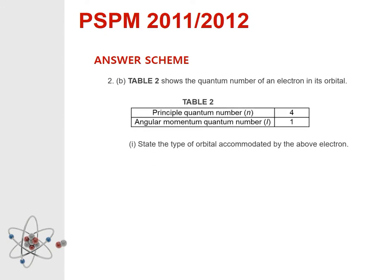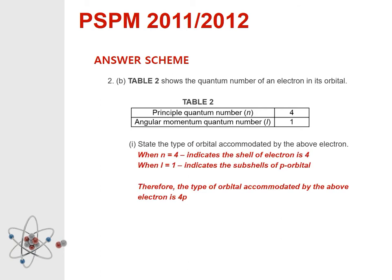Question 2b number 1: Table 2 shows the quantum numbers of an electron in its orbital — principal quantum number n equals 4 and angular momentum quantum number l equals 1. State the type of orbital. Answer: when n equals 4 it indicates shell 4; when l equals 1 it indicates the p subshell. Therefore the type of orbital is 4p.